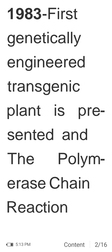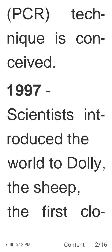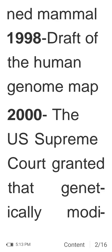In 1983, the first genetically engineered transgenic plant was presented, and the polymerase chain reaction (PCR) technique was conceived. In 1997, scientists introduced the world to Dolly the sheep, the first cloned mammal. In 1998, a draft of the human genome map was produced.